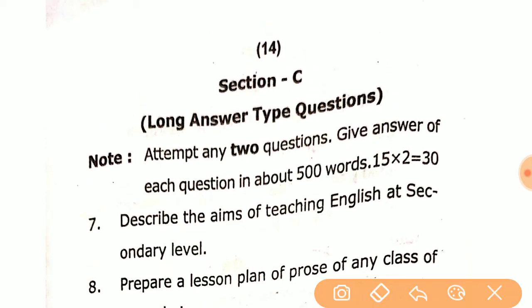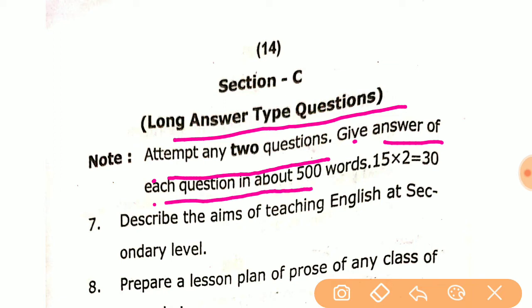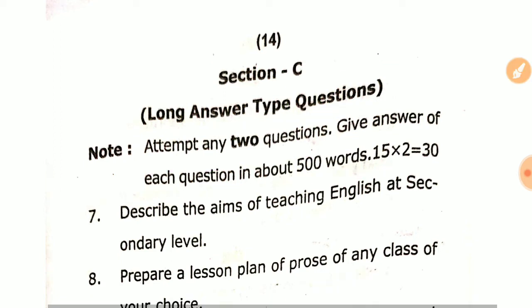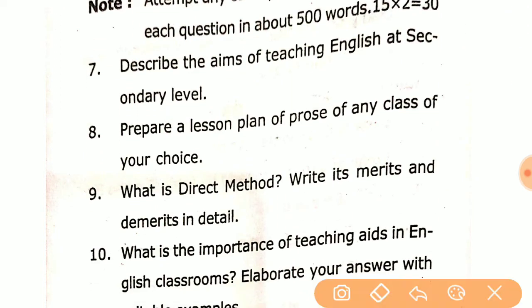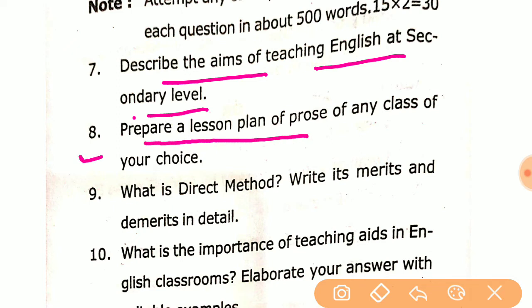Section C: Long answer type questions. Attempt two questions. Give answer of each question in about 500 words. Q7: Describe the aims of teaching English at secondary level. Q8: Prepare a lesson plan of prose for any class of your choice.